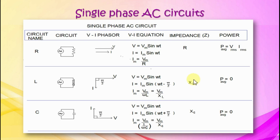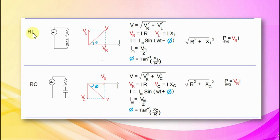In a pure C circuit, current leads voltage by 90 degrees. Current is Im sin(omega t plus 90). Im equals Vm by (1 by omega C). 1 by omega C is capacitive reactance Xc. Average power is zero. Impedance is Xc. In an RL circuit, total voltage is the resultant of inductor voltage VL and resistor voltage VR. V equals root of (VL squared plus VR squared). Impedance Z equals root of (R squared plus XL squared). Phi equals tan inverse XL by R. Average power is VR times I.